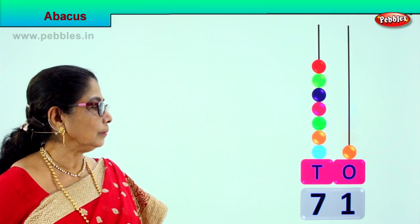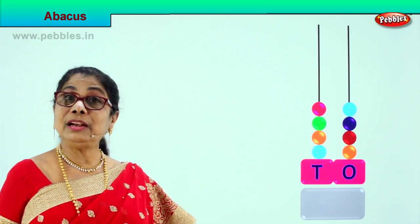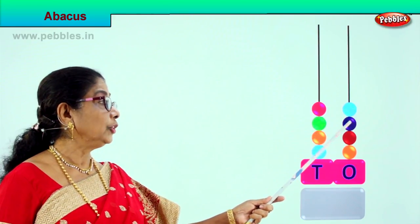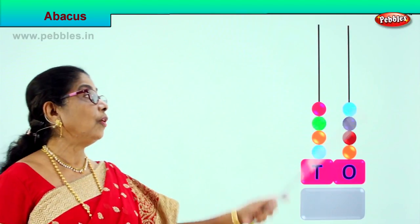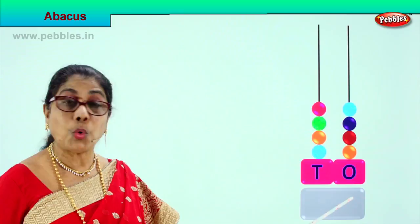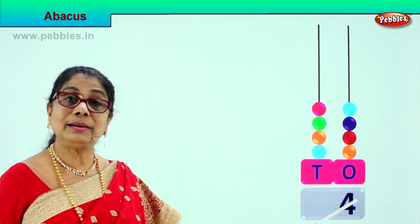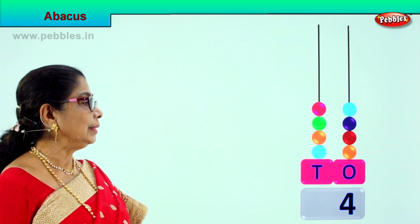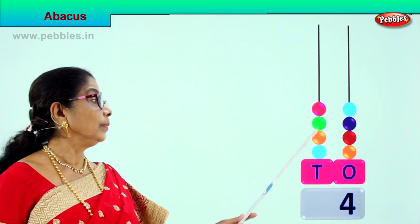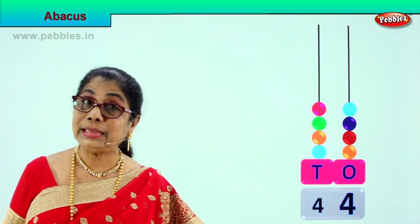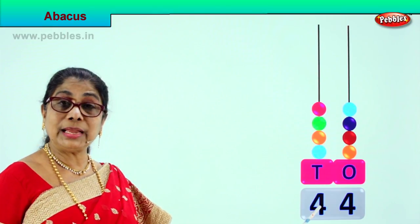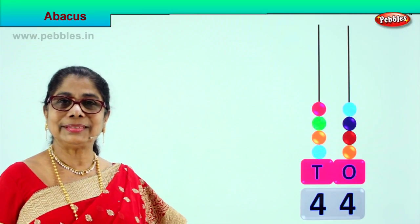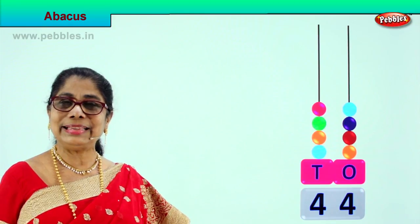We are learning to count using abacus. Let's count the ones place: 1, 2, 3, 4 — there are four beads on the first rod and we write four, meaning four ones. In the tens place we have one ten, two tens, three tens, four tens — four beads each worth ten, so we write four tens. Four tens and four ones is forty-four. Are you learning to count using abacus? Let's take another sum.